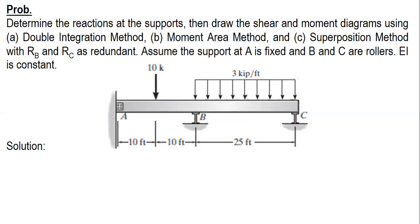I have already made a video about the first method — double integration method and the moment area method — and the shear and moment diagrams were already included in that video. So for this video, I'm going to use the superposition method with RB and RC as redundant, which follows the same procedure as the other two methods.